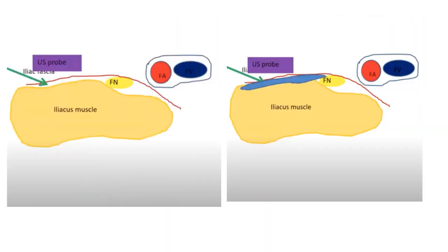To recap: you have the iliopsoas muscle with fascia latae and fascia iliaca together above it, and the femoral nerve lying below the fascia iliaca. When scanning, start from the medial aspect and slide the probe laterally until you lose sight of the artery, nerve, and vein. When inserting the needle from the lateral aspect, the tip should not pass beyond the two-thirds to one-third medial-lateral junction, consistent with the landmark technique.